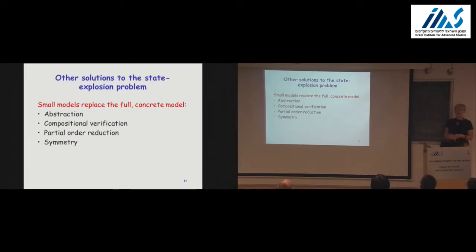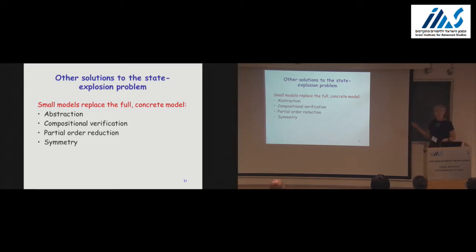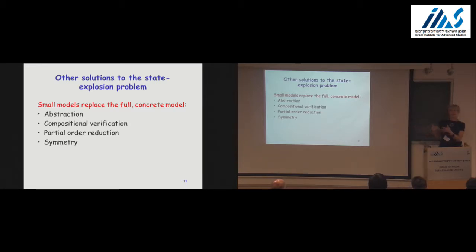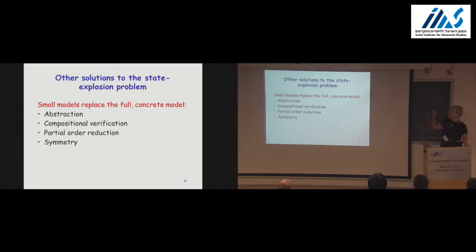Another direction says: we have a very large model — let's try to reduce it but still be able to use it for verification. One option is abstraction: we hide some information so our model is not full, but we make sure that whatever we prove on the abstract model, we have a mathematical guarantee it will be true in the concrete model. Possibly counterexamples found may not be real, and we will know what we are doing — this is why we do formal verification.